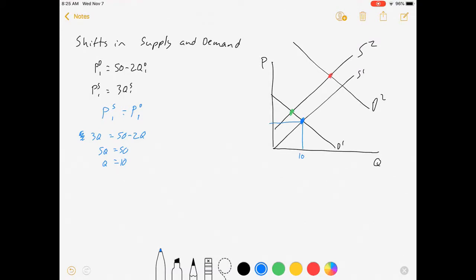Now to solve for that price, all we have to do is substitute 10 into either function. I'm going to substitute it into the supply function. So p is equal to 3 times q, which in this case, 3 times 10 is 30. Perfect. We already got blue.